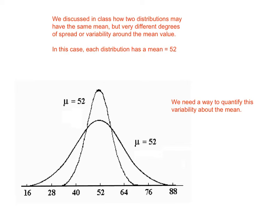In the case of the diagram that you see here, both distributions have a mean of 52, but notice that the spread of scores, the degree of variability around the mean value of 52, is quite different for both distributions. So we need a way to quantify this variability around the average or mean value.